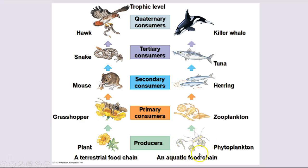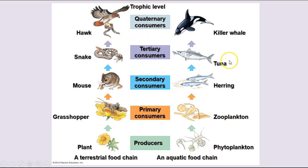In the aquatic food chain, we have phytoplankton, which is the photosynthetic algae in the water. Zooplankton — the animal-like protista that eat the algae — would be the primary consumers. Then herring or other small fish would be the secondary consumers. A larger fish like a tuna would be tertiary, and the killer whale eating the tuna would be a quaternary consumer. Generally, we eat at the primary and secondary level, occasionally tertiary, and quaternary most often when we eat fish, because aquatic food chains tend to have more steps than most terrestrial food chains.